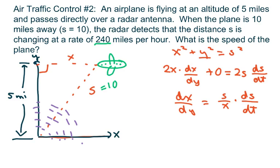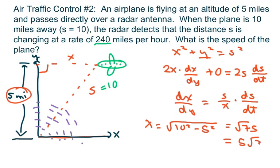Now, when s is 10, we're going to get x equals the square root of 10 squared minus 5 squared. That's the square root of 75, which equals 5 square root of 3. So that's your x.